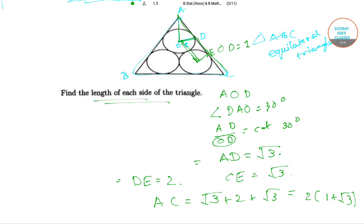So the length of each side of the triangle, that is our answer, would be 2(1 + √3).